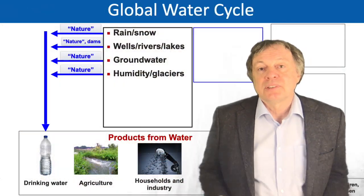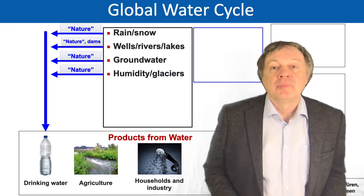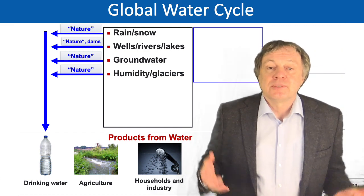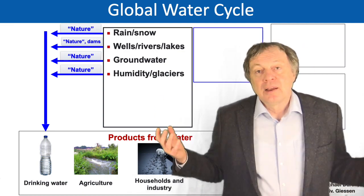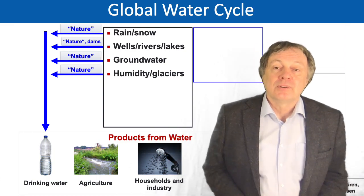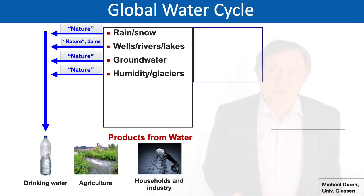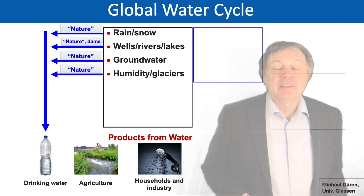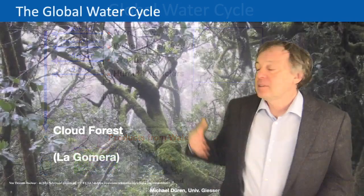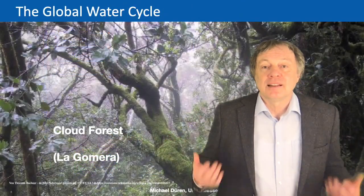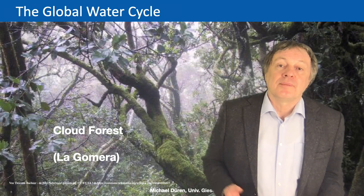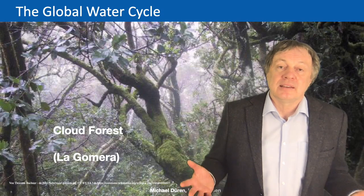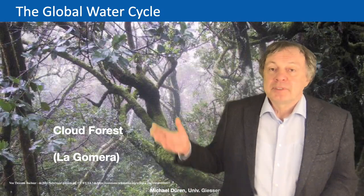The last of these water sources is humidity. There are quite a few plants which can just live from the humidity of the air — they don't have any roots; they just lay around and collect water from the surrounding atmosphere. There are other examples where humidity is used by nature. This is a picture from my favorite island, La Gomera, which is off the coast of Africa. This small island is in the middle of the ocean, and the air at the ocean is quite humid.